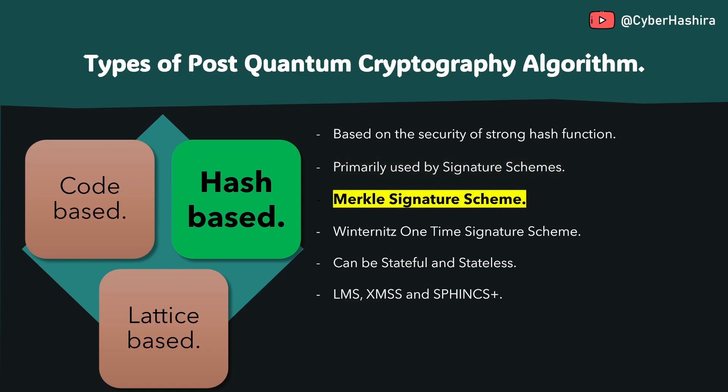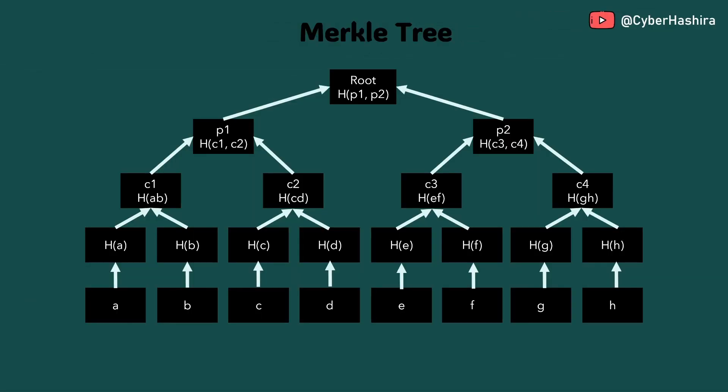The Merkle signature scheme is one of the foundational elements of hash-based cryptography. It uses a Merkle tree combined with a one-time signature scheme to generate digital signatures. A Merkle tree is an upside-down tree with the root at the top and multiple leaf nodes at the bottom. It is also referred to as a hash tree because the entire structure is formed using the hash values of the nodes.